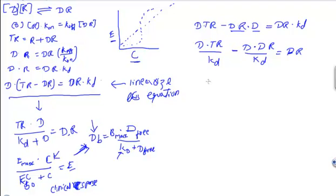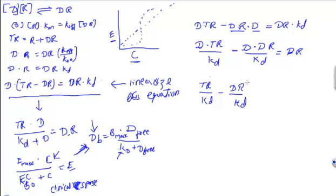D is a common term, so we divide the entire equation by D. This gives us: DR divided by KD — where DR is Emax and KD is EC50 — minus DR divided by EC50, and the D over D cancels, leaving us with DR divided by D.